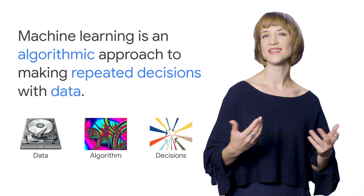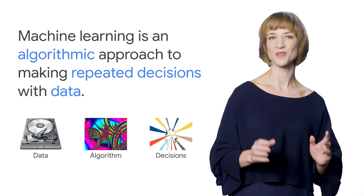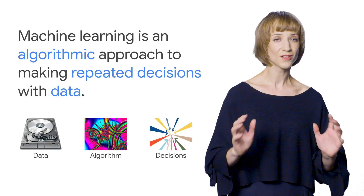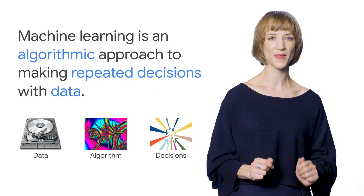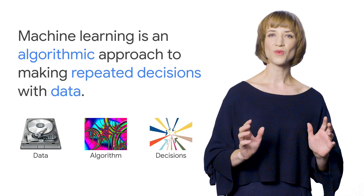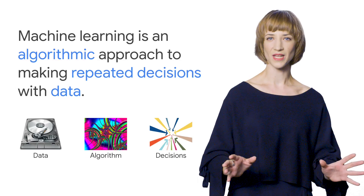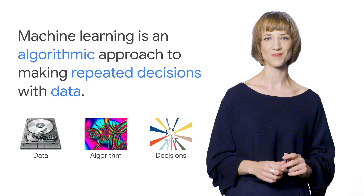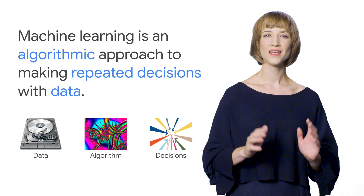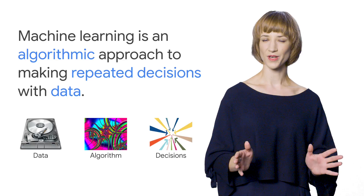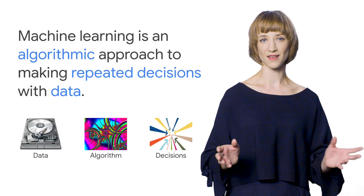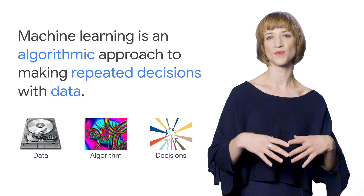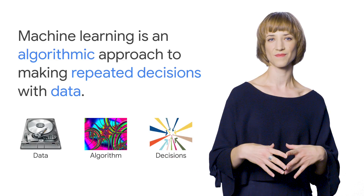Machine learning is an algorithmic approach to making repeated decisions with data. And it's incredibly useful. It lets you automate whole new classes of tasks and create business-critical prediction systems. To make machine learning work, you need data and algorithms. Putting them together gives you models for making predictions.